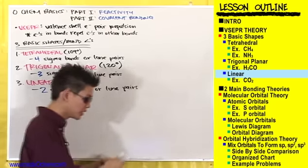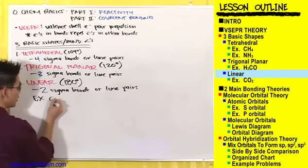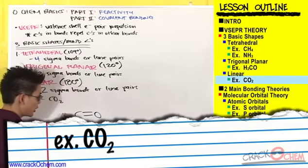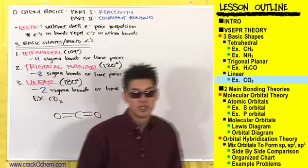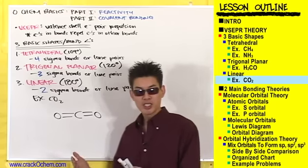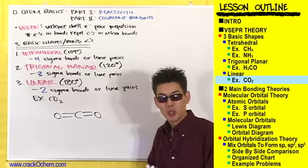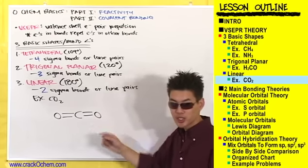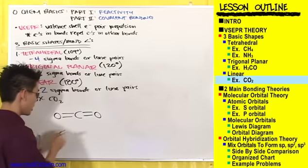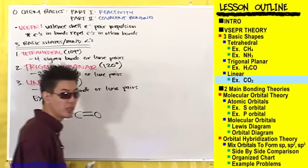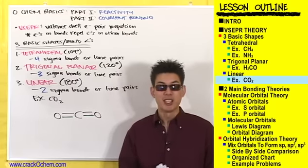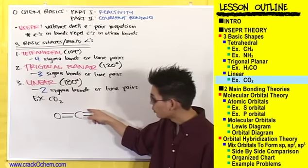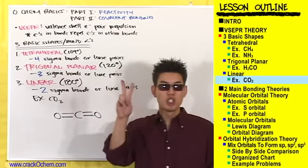Let's look at an example of a linear compound: CO2, carbon dioxide. CO2 looks like this — a C double bonded to an oxygen and another oxygen. There's one sigma bond connecting this oxygen to this carbon and another sigma bond connecting this carbon to this oxygen, giving us a total of two sigma bonds. All other bonds must be pi bonds — one here and one here, giving us a total of two pi bonds.